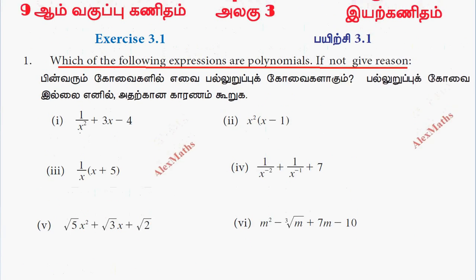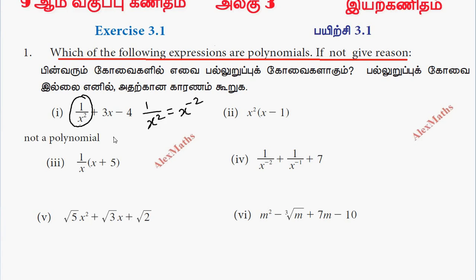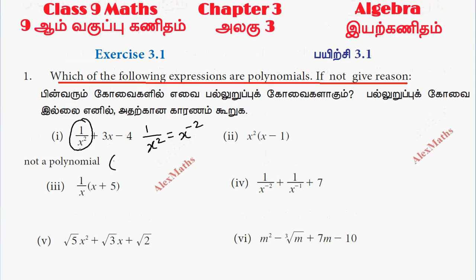The first term is 1 by x², which equals x to the power minus 2. So the first term has a negative power, and therefore this is not a polynomial — one of the powers is negative.